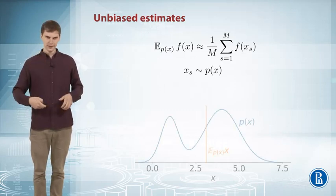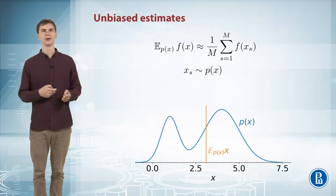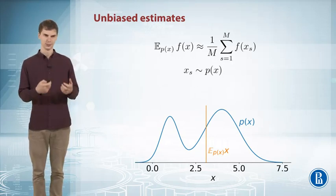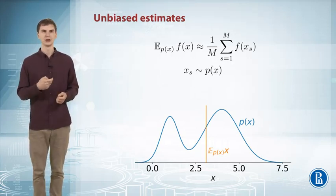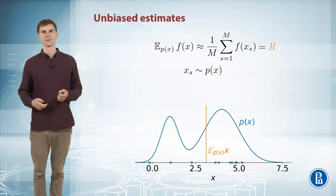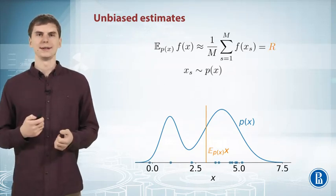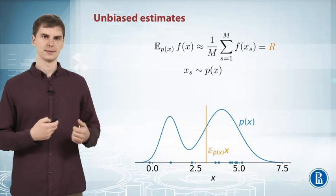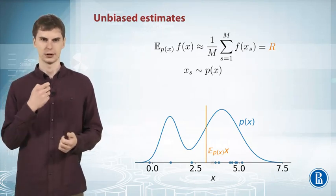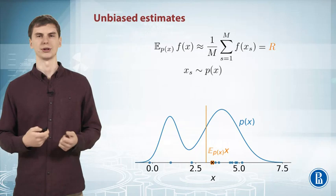And this idea may look like this. So here the blue line is the distribution, p(x). And you can generate samples from it, like this. And then you can take the average of your f on this dataset and it can look like this, for example, like red cross here.